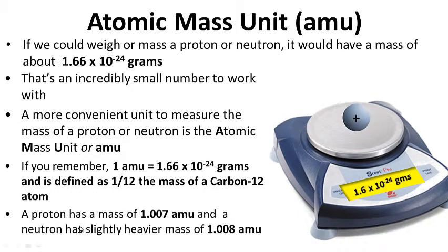A proton has a mass of 1.007 AMU — not exactly 1. And a neutron has a slightly heavier mass of 1.008 AMU — once again, not exactly 1.